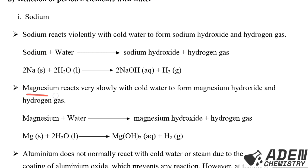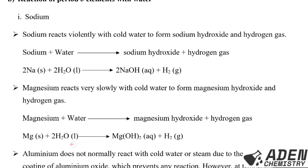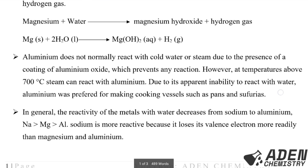The second element is magnesium. Magnesium reacts very slowly with cool water to form magnesium hydroxide and also hydrogen gas. The balanced chemical equation is: 1 mole of magnesium (solid) reacts with 2 moles of water (liquid), giving us 1 mole of magnesium hydroxide (aqueous) and also 1 mole of hydrogen gas.